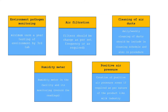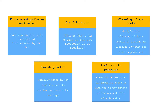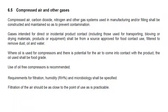The third point is cleaning of air ducts — it should be included in your cleaning schedule, and you need to define the procedure for how you will clean the air ducts. The fourth is humidity monitoring — a humidity meter should be placed in the area and monitoring records should be available. The last point is positive air pressure — creation of positive air pressure in the area is required for some sectors like dairy or beverage industry.